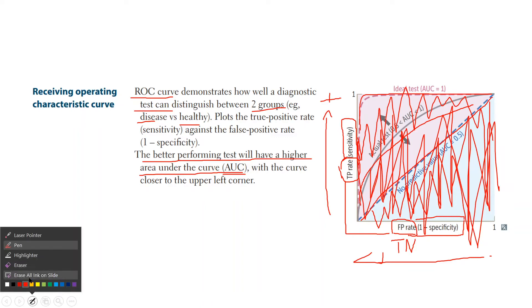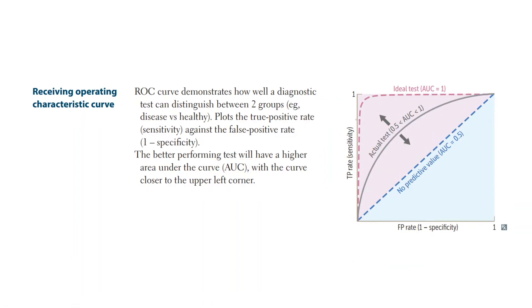Let me erase all the ink just so that we can see a bit better. So now how do we understand what do they mean by better performing test? A better performing test in general has a high sensitivity and a high specificity. So these both should be high.